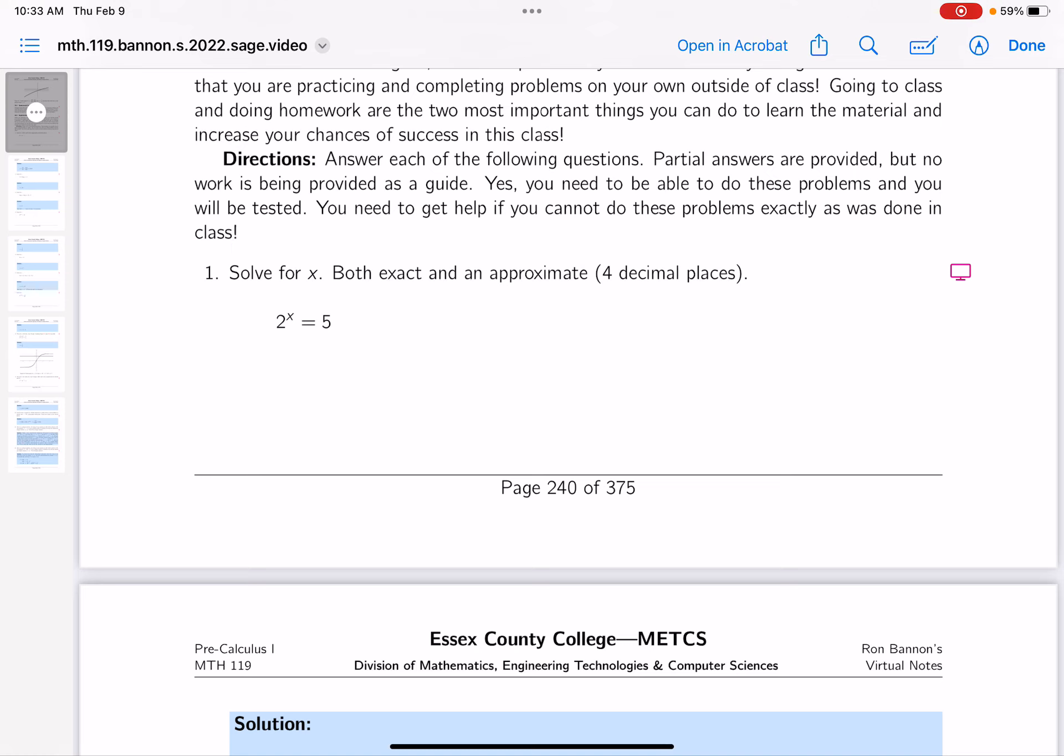So looking at it, I certainly know it's somewhere between 2, because 2 squared is 4, and 3. I'm going to say it's closer to 2, but certainly that's not a four decimal place approximation.